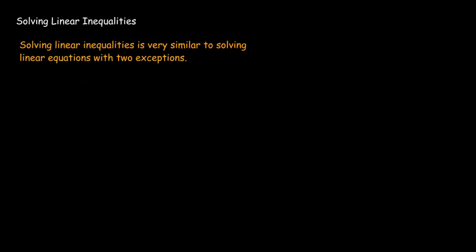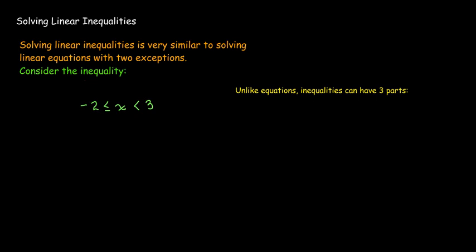The second exception involves an inequality with a bounded interval. If we have x between negative 2 and positive 3, that comes from an inequality with three parts — a left, a middle, and a right. When applying techniques from solving linear equations, we have to remember to perform each operation not just to the left or right, but to all three parts.